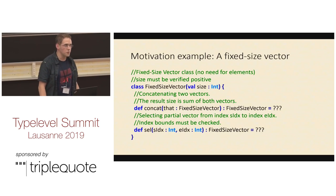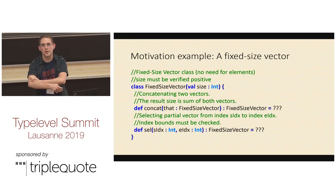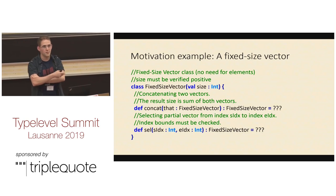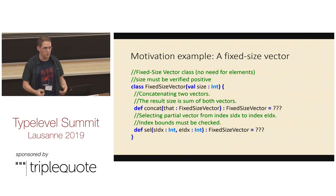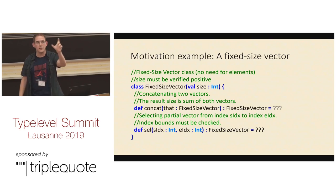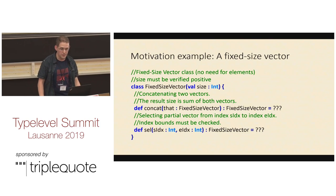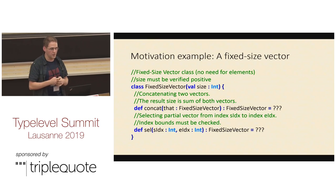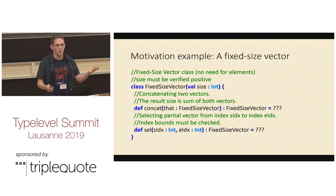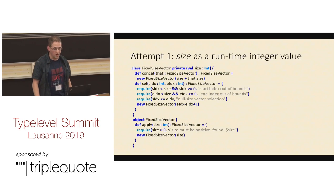This is the motivation example. For those who don't know what a hardware description language is — you describe how to construct hardware, and hardware has bit-accurate types. Let's take an example of a fixed-size vector, like an arithmetic vector used in math. It has a fixed size, and we want to be able to concatenate two vectors together and select parts of the vector to create a new sub-vector.